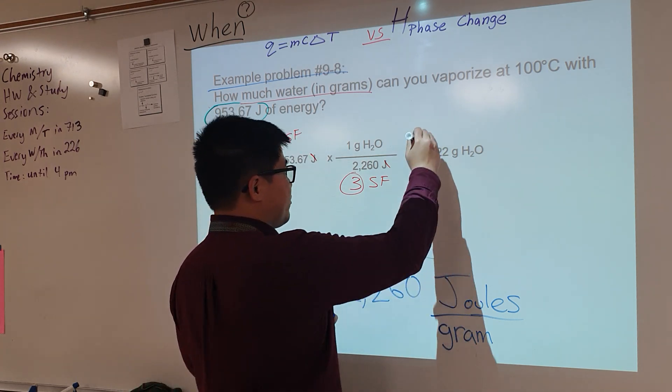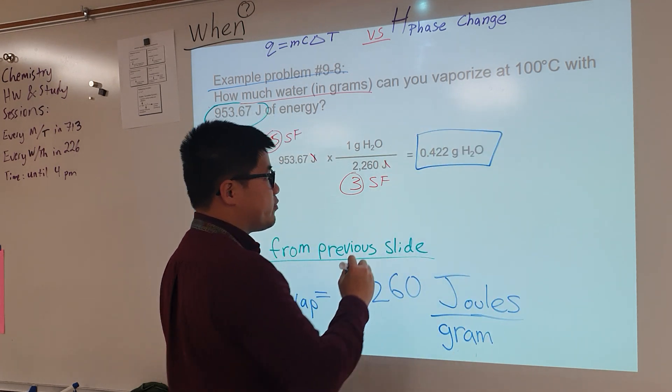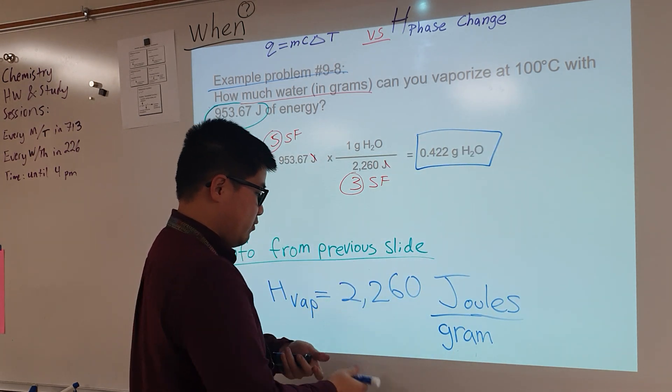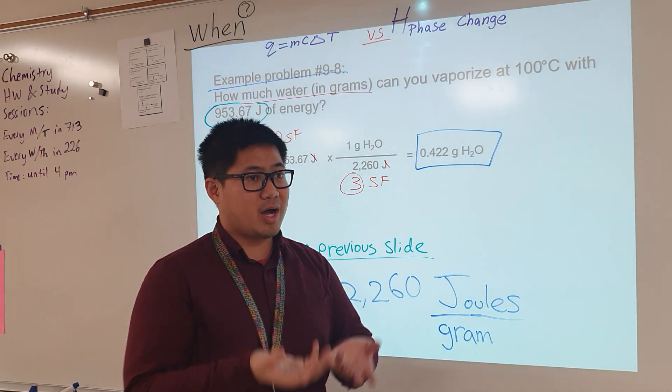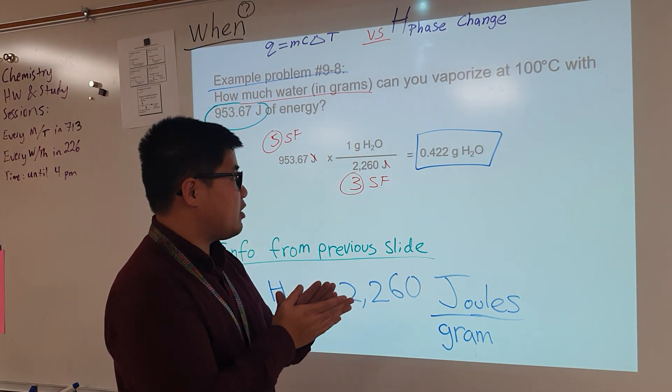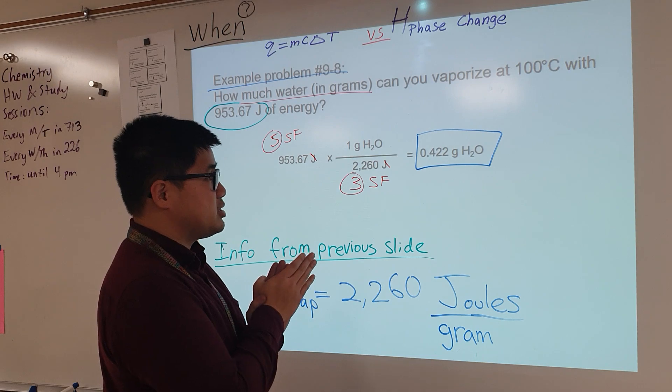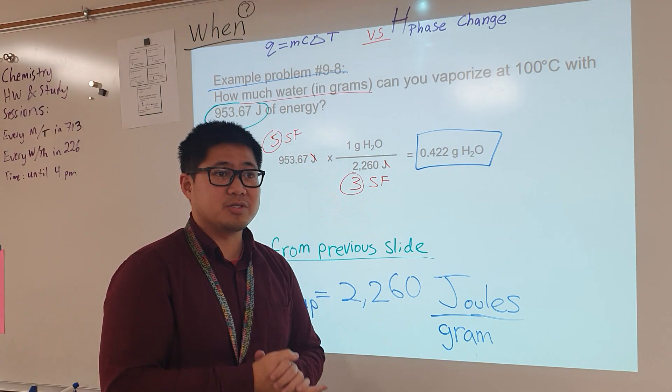This is our final answer. 0.422 grams of water. I hope that watching this video, you guys are now a little bit more wiser and more better off understanding how to do these calculations. And thank you guys for watching. We'll see you next time.